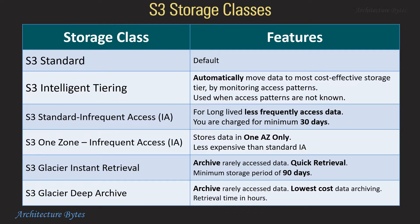S3 Glacier is for archiving data. In case of Glacier Instant Retrieval, the minimum storage period is 90 days and data can be retrieved quickly. In case of Glacier Deep Archive, retrieval time is in hours and it is the lowest cost data archiving solution, used for rarely accessed data.